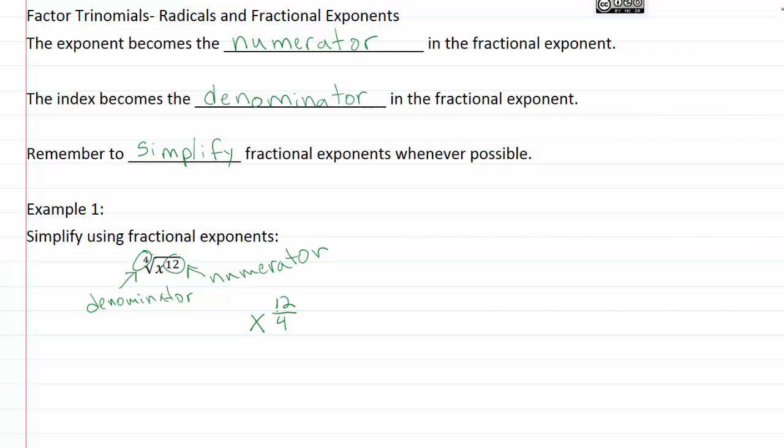So now I want to simplify or reduce this fraction that's my new exponent. So I can see in this fraction both the top and the bottom are divisible by four. So when I go ahead and reduce that I come up with x raised to the three over one and three divided by one is just a plain three.